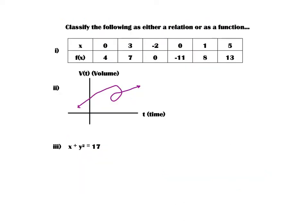Let's classify the following examples as either a relation (non-function) or a function. Looking at the first one, I see zero maps to four, three to seven, negative two to zero, zero to negative eleven, one to eight, and five to thirteen. I notice that zero will produce both four and negative eleven. Therefore, this is not a function. If I were to take one of those out, then it would be a function.